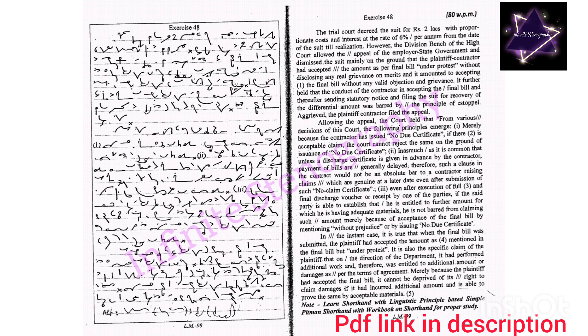Therefore, such a clause in the contract would not be an absolute bar to a contractor raising claims which are genuine at a later date even after submission of such no claim certificate. Even after execution of full and final discharge voucher or receipt by one of the parties, if the said party is able to establish that he is entitled to further amount for which he is having adequate materials, he is not barred from claiming such amount merely because of acceptance of the final bill by mentioning without prejudice or by issuing no due certificate.